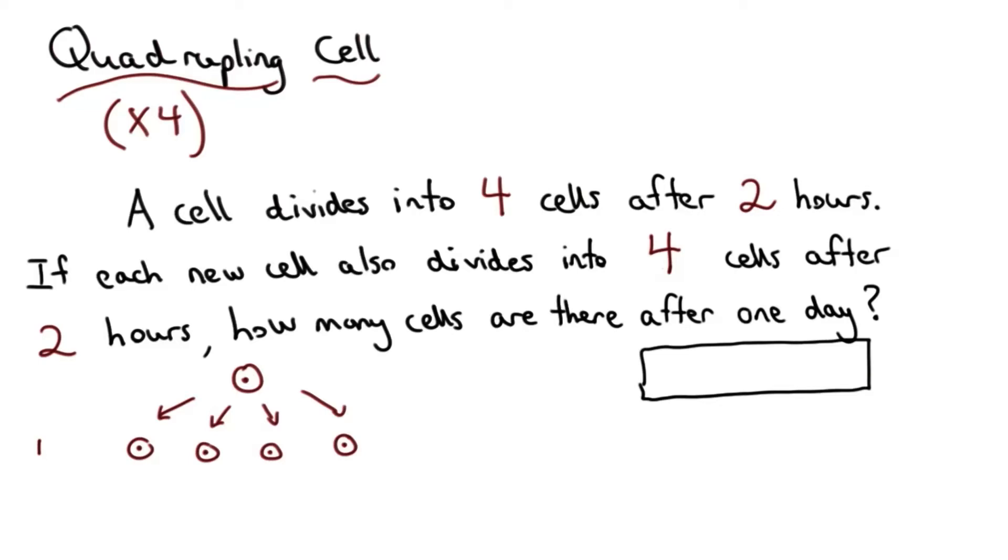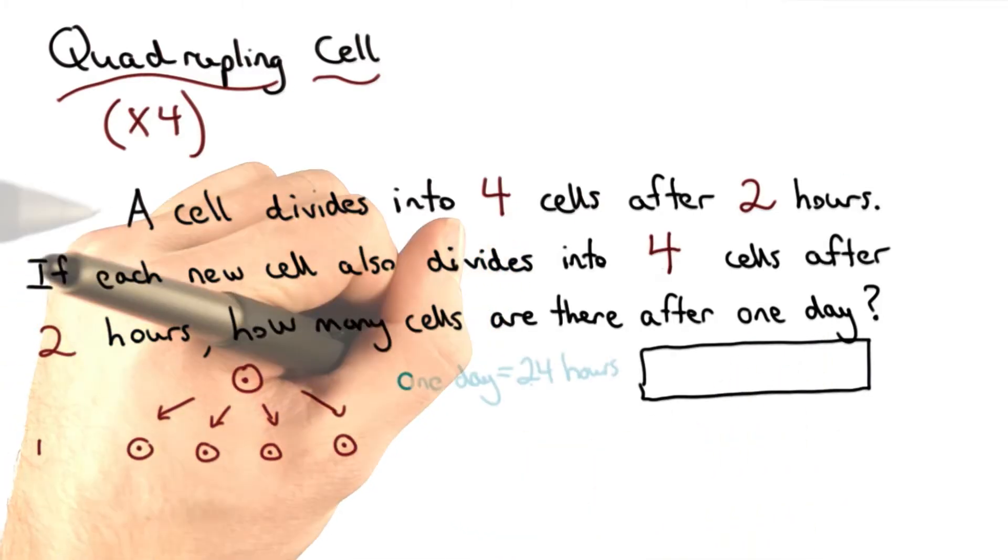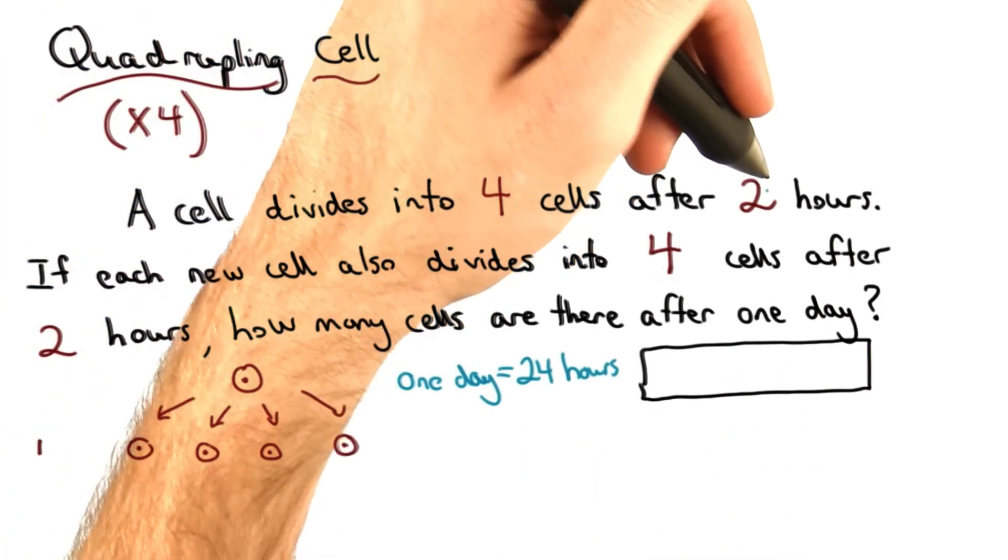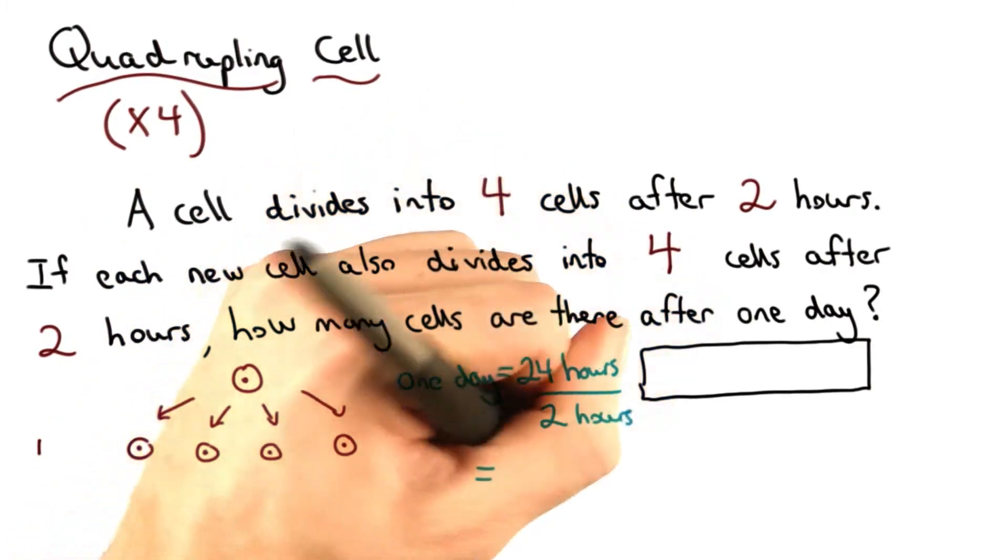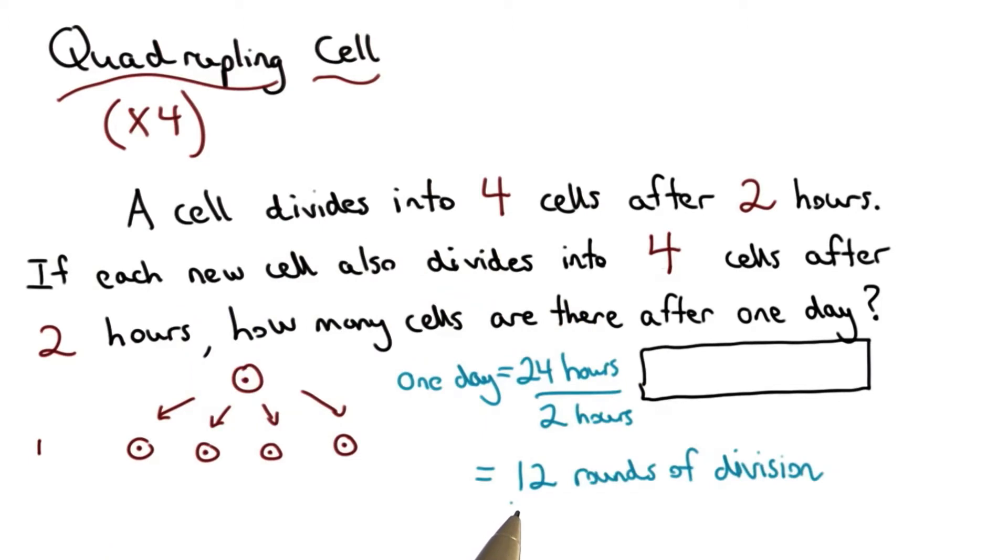Alright, I need to think about how many rounds of divisions I'll have. I know my cells are going to replicate over 1 day. 1 day is 24 hours. I know my cell divides every 2 hours, so I can take 24 hours and divide it by 2 hours. That will give me 12. This is the number of rounds of division I'll have.